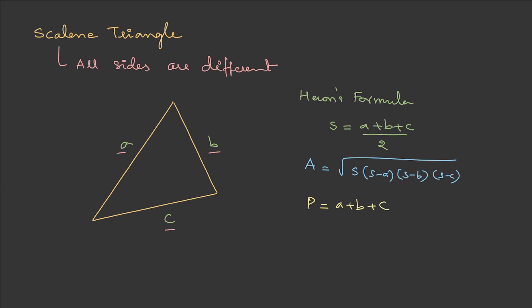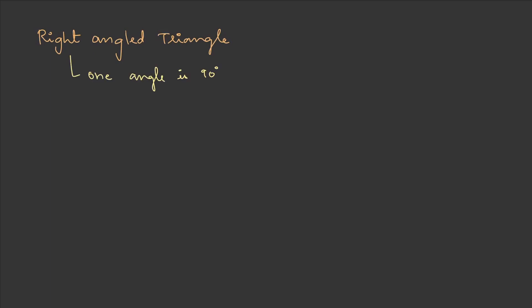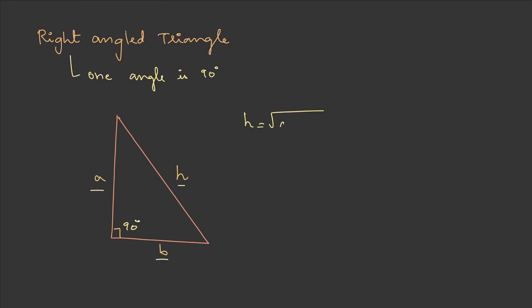The final type is the right angle triangle, where one angle is 90 degrees. Let one side be a, another side be b, and the hypotenuse opposite the 90-degree angle be h. Using the Pythagorean theorem, h = √(a² + b²). The area is half × a × b, and the perimeter is the sum of all sides: a + b + h.